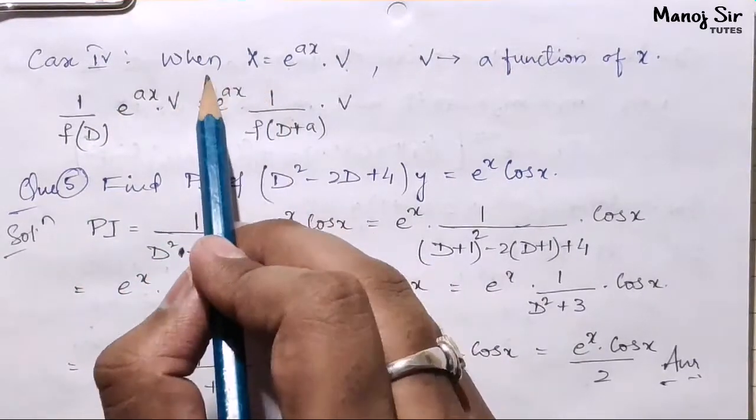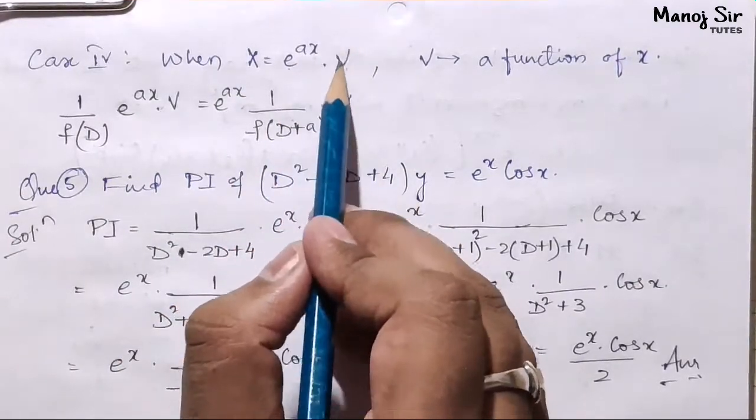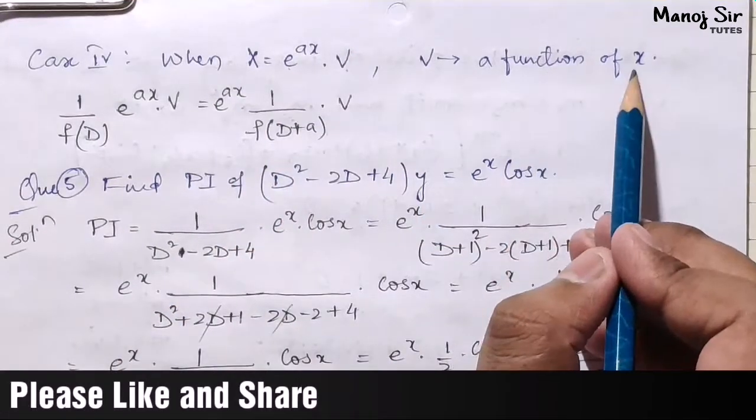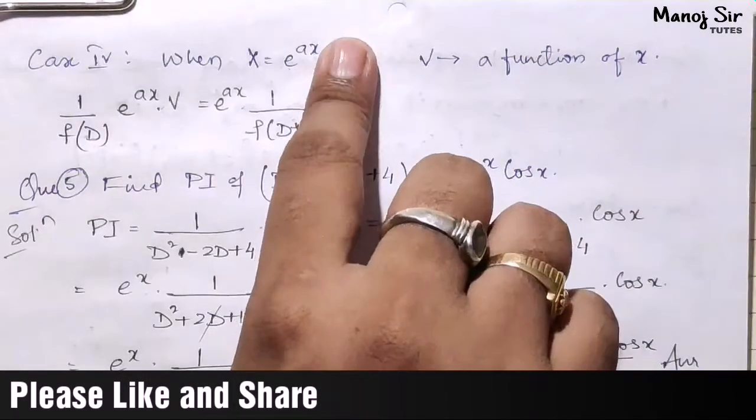The case is when X equals e^(ax) times V, where V is any function of x. In the first case, we saw when the exponential was alone in the problem.